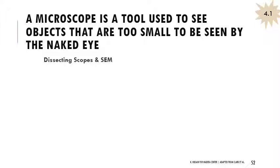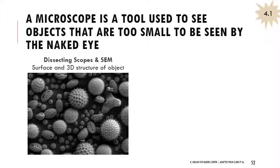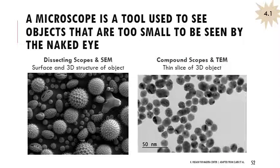When we use a dissecting scope or scanning electron microscopy (SEM), that creates an image where we're looking at the surface and 3D structure of the object. Here we have a micrograph of pollen where you can really see the topography of the pollen grains very clearly. When we use compound scopes — which we often use in lab — or transmission electron microscopy (TEM), we're looking at a very thin slice of a 3D object. You can move through different slices, but you won't see the overall 3D look that we see with dissecting scopes and SEM. SEM and TEM are very expensive and we don't have that technology at Madera Center, but a lot of pictures in your textbook and slides will be from SEM and TEM.